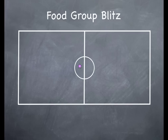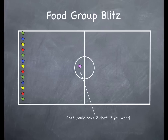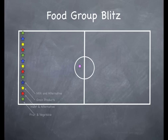In this game you're going to start with someone in the middle and they will be the chef. You can have two of them if you want. The other students are going to line up against the edge and you'll give them each a penny — green, red, yellow, and blue — each representing the food groups. So those players are the different food groups.